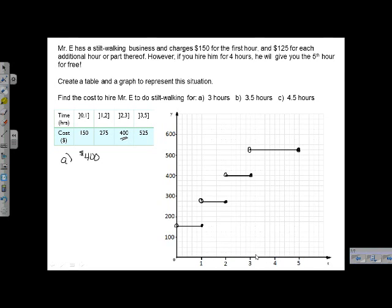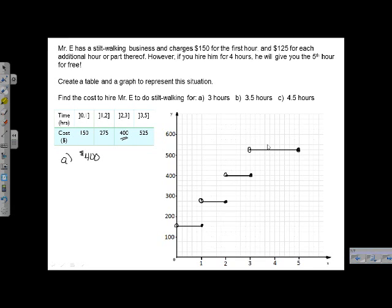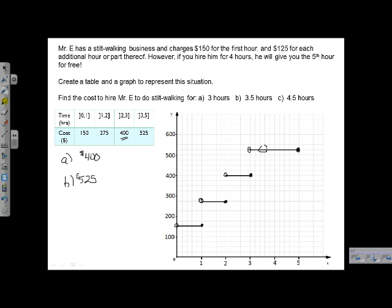What about three and a half hours? Three and a half is going to be right in here. And then we go up. And we can see that for three and a half hours, it's going to be $525. And again, we can get that same information from the table. Once we go over three, we're in this group here, $525.